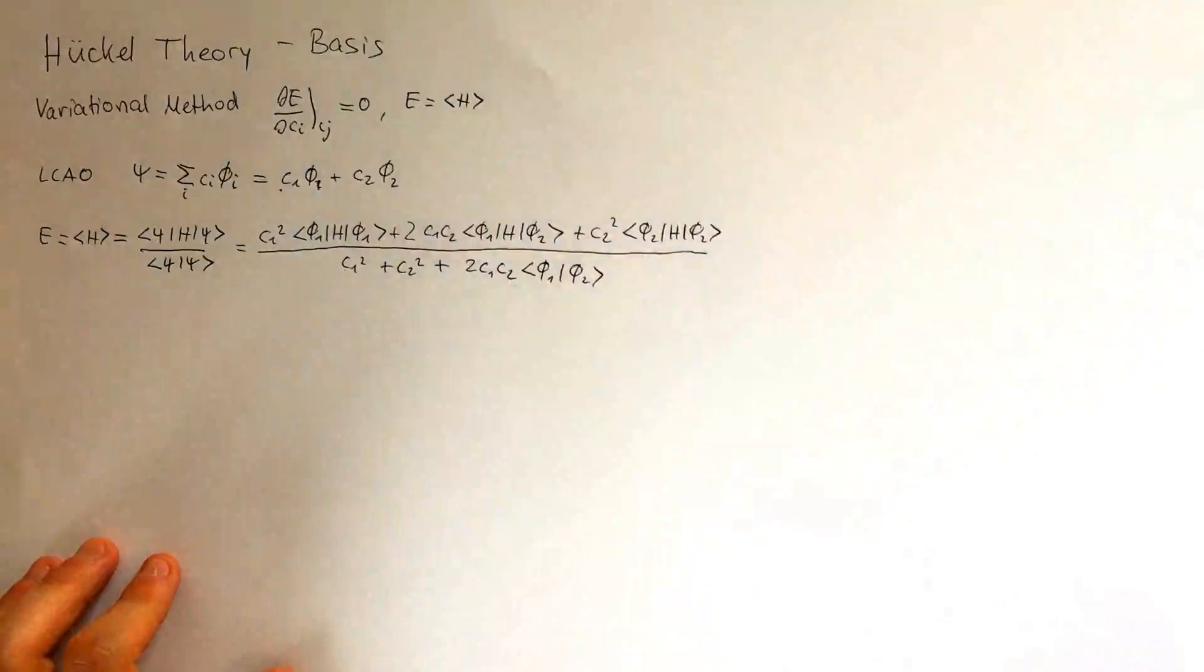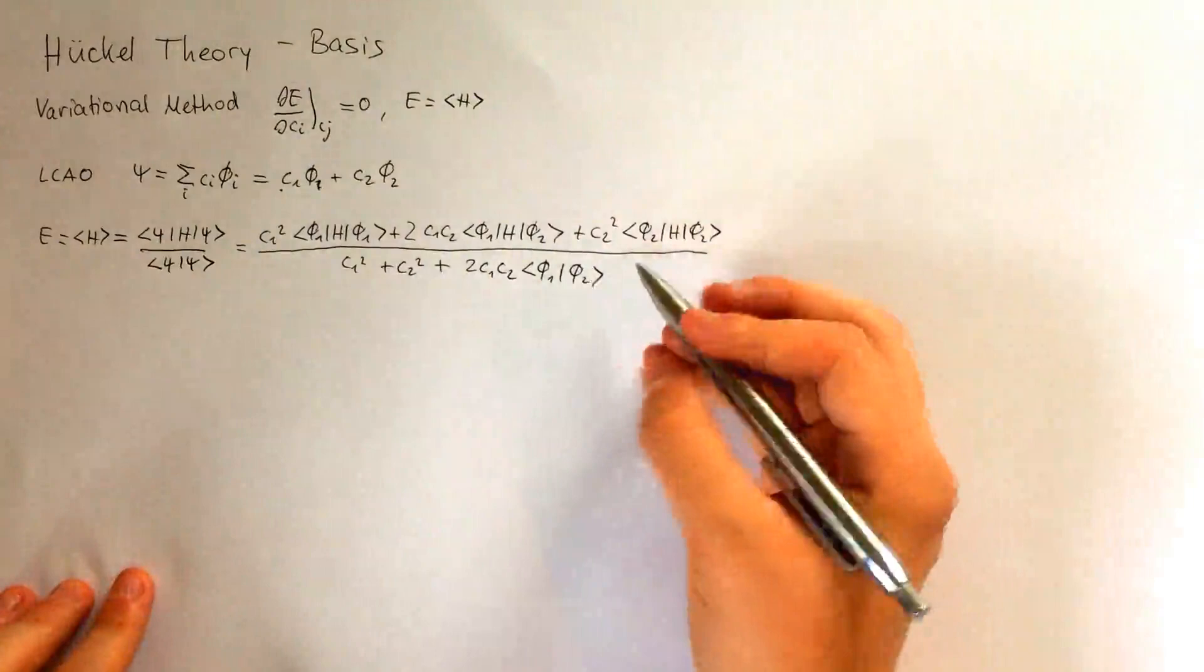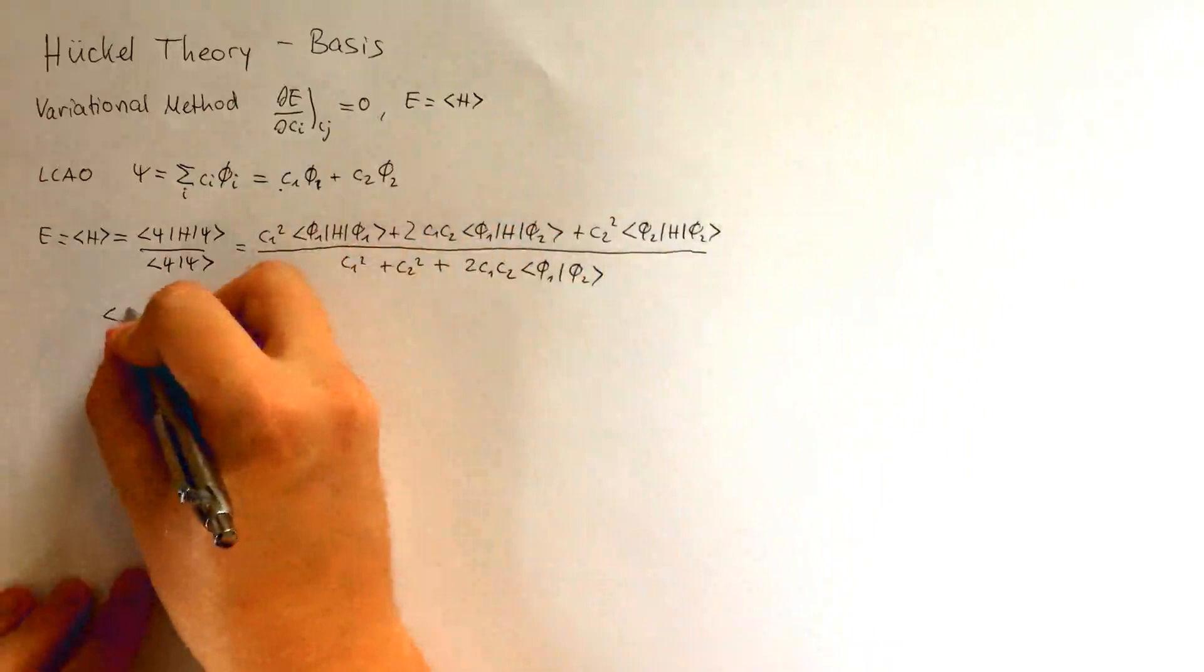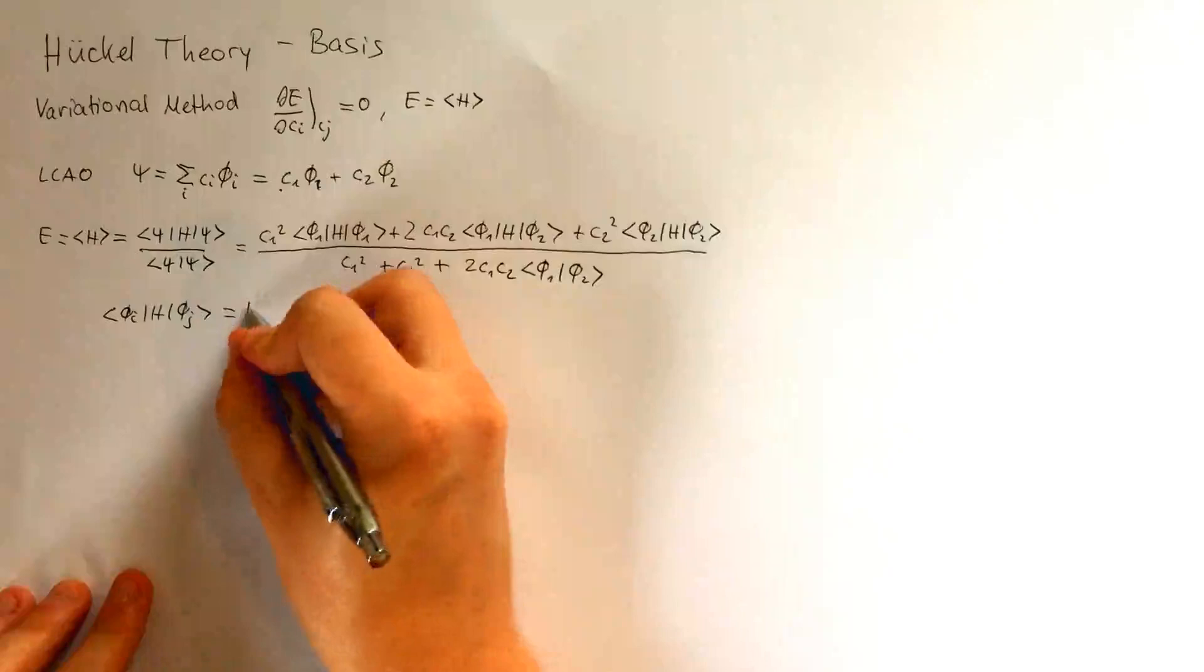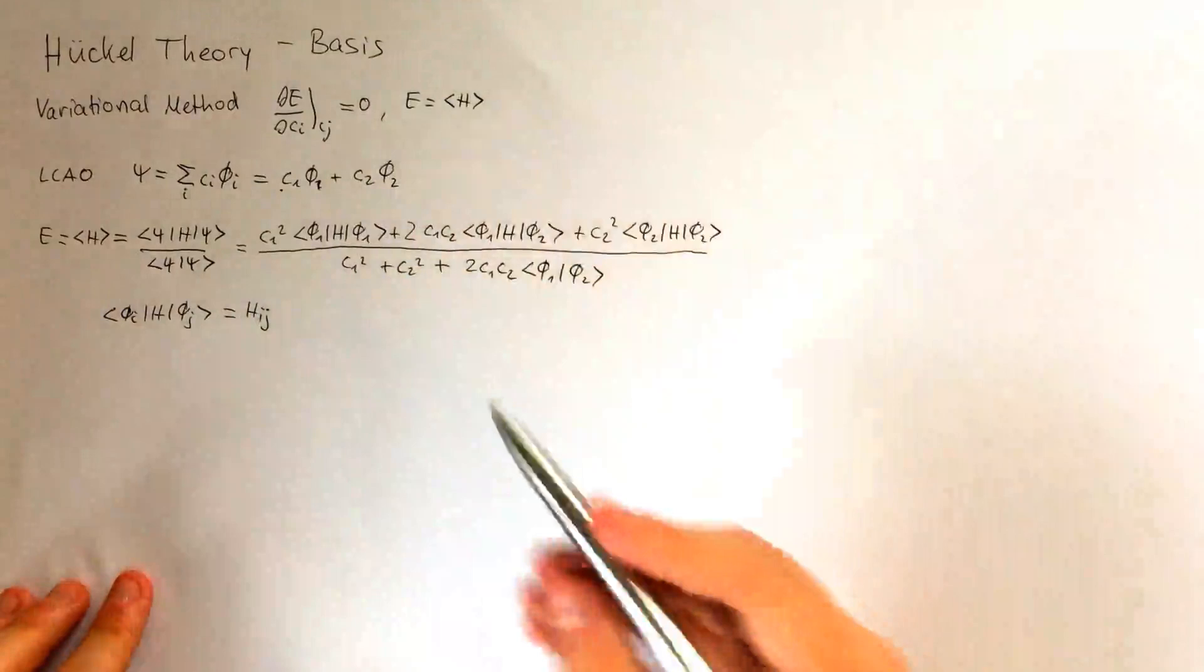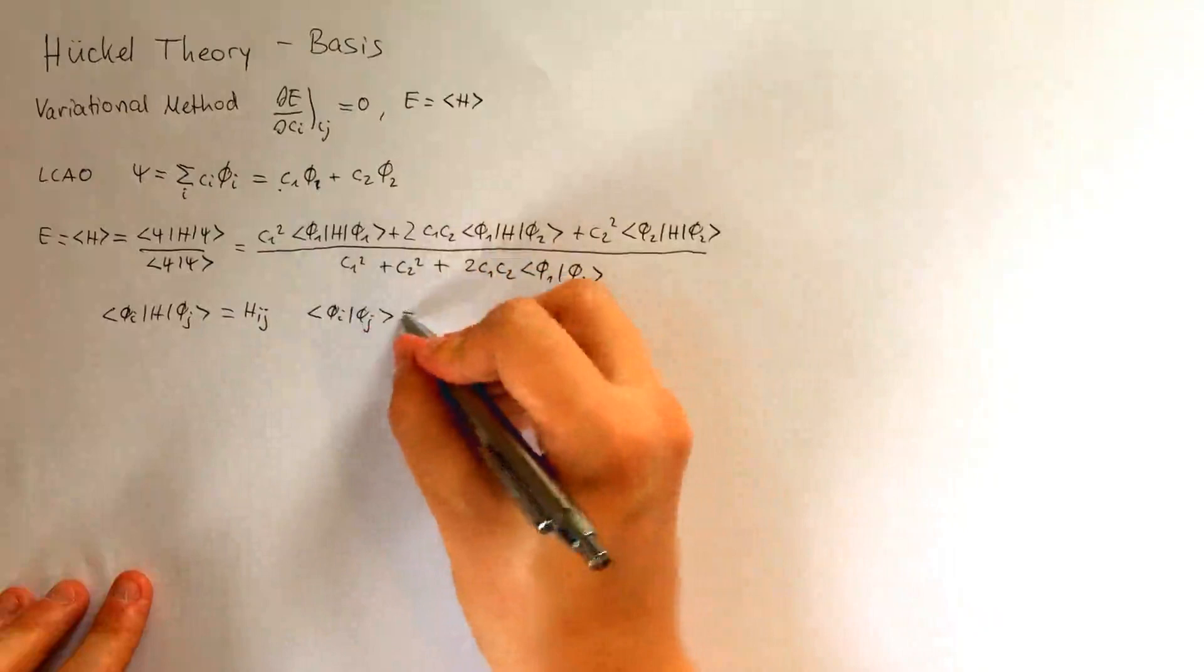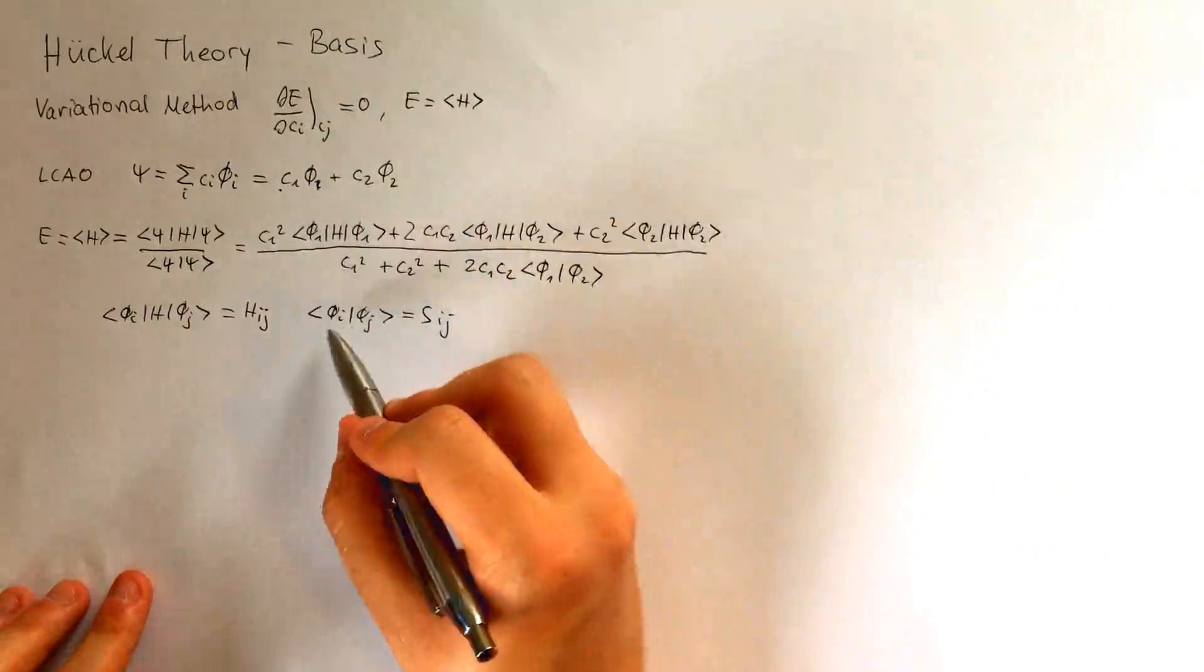Now let me simplify this expression by introducing some notation. We're going to call these terms, so phi i H phi j, we're going to call Hij, which describes the energy of the overlap of the two wave functions, and we're going to say that phi i phi j is just Sij, which is the overlap integral, and says how well the wave functions phi i and phi j overlap.